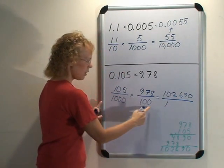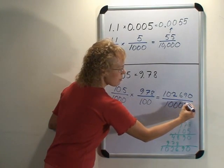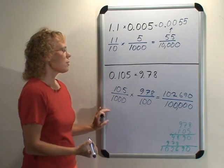So we have 102,690 over this thousand and hundred. Here you can just put one here and count these zeros: one, two, three, four, five zeros. And a thousand.